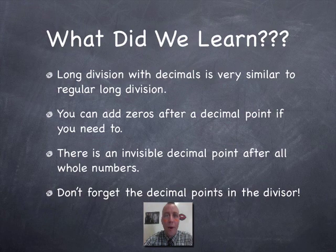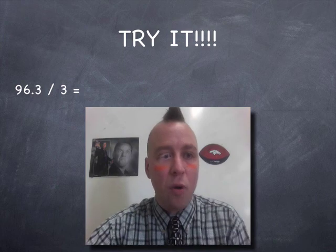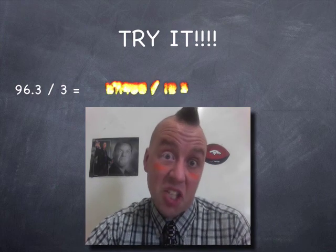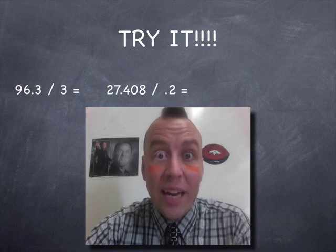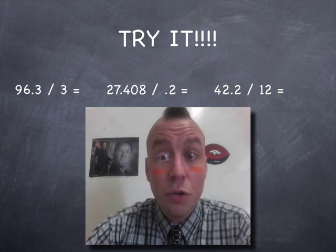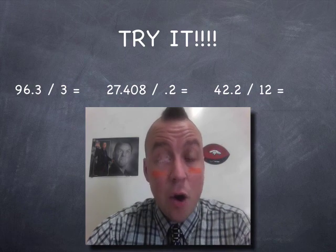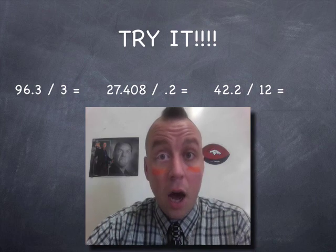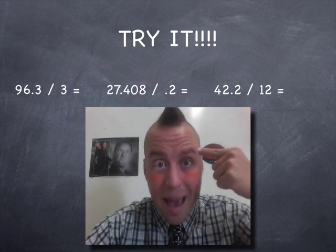All right. You got to try this. You're going to have to play with it, practice it. You're going to have to screw it up, get it wrong, figure out what you did wrong so you can back it up and get it right. That's part of learning. So try these three problems: 96.3 divided by 3, I think that one's kind of easy. This one's not so easy: 27.408 divided by 0.2 or 2 tenths. That one's tough. A bunch of rules that are conflicting there. And then finally, 42.2 divided by 12. Get excited. Get your brain ready for this. You can use this video again and again if you need to practice or if you need to see it done. Or really, you should find somebody who knows what they're doing and ask for some help now that you kind of have a starting point. Get this done. Become masters of this. I will see you next time.